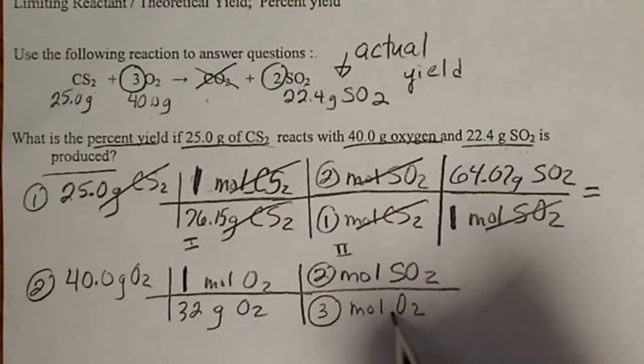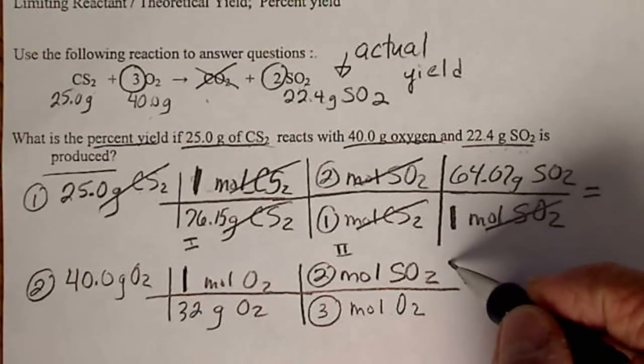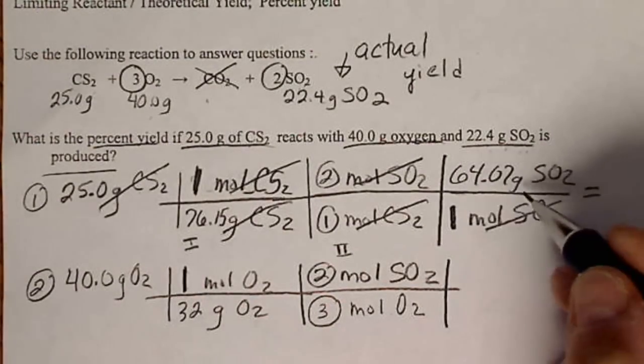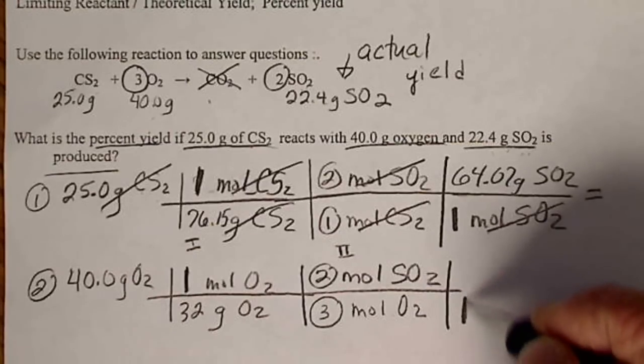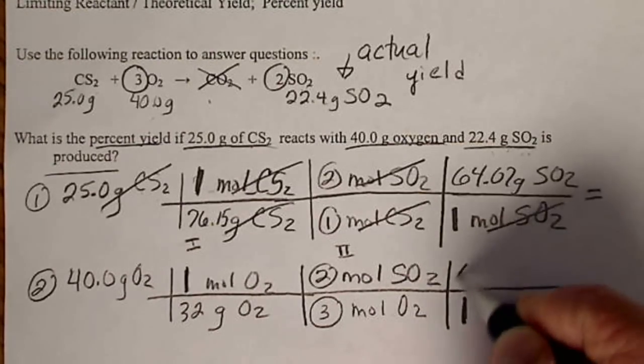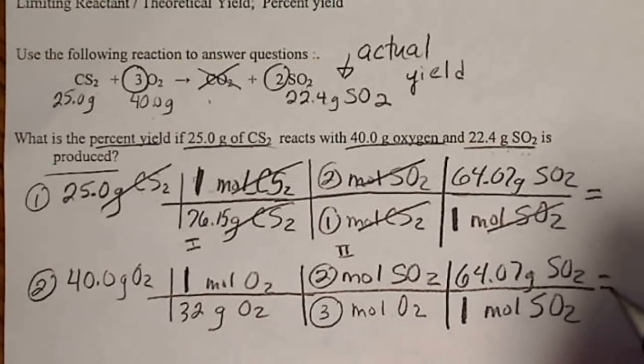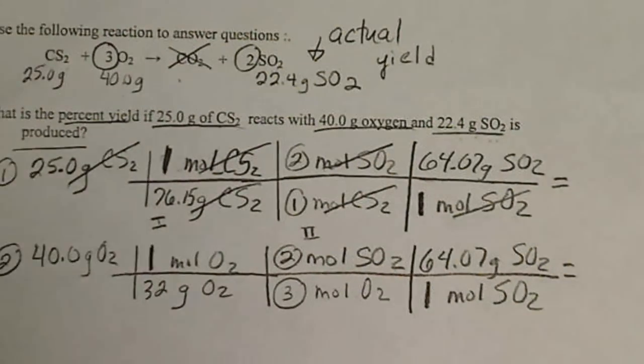Step 2 is always the balanced equation or the ratio of the ingredients to products in the recipe. The last step is going to be identical. So 1 mole of SO2 always weighs the same, 64.07 grams of SO2. So if we do these two calculations...